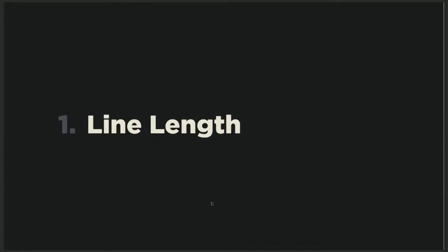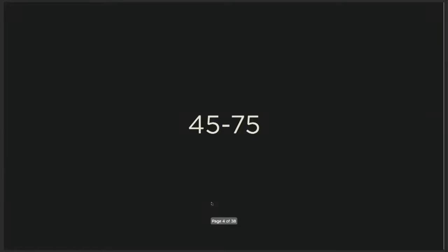Rule number one: line length — or column width, or measure, which is basically the same thing — should be somewhere around 45 to 75 characters per line, including spaces and punctuation marks.